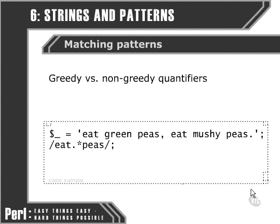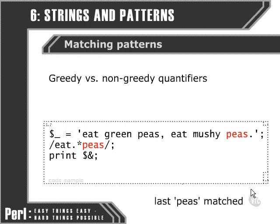If we simply used 'eat', followed by a wildcard — the dot character — and then the asterisk, which stands for zero or more characters, and then 'peas', what we might expect is that Perl will find the first instance of this pattern, which is 'eat green peas'. However, what actually happens when Perl processes the pattern, looking at the string, is that it will find the first 'eat' at the beginning of the string, and then instead of looking for the next instance of 'peas', it'll actually start at the other end and work back up, looking for the furthest away instance of 'peas' it can find.